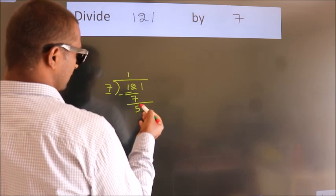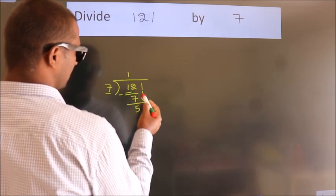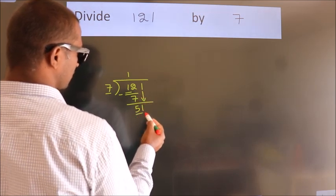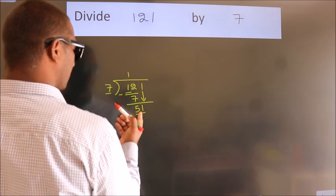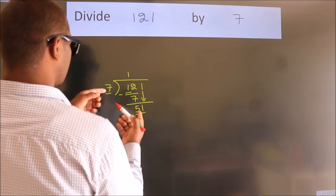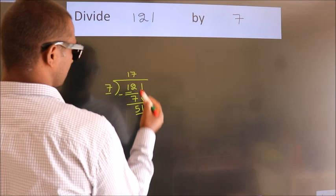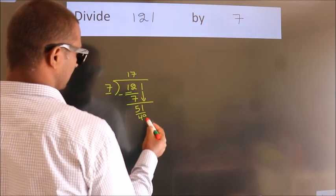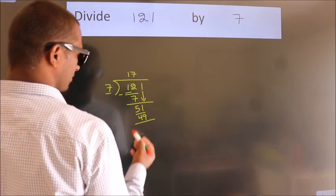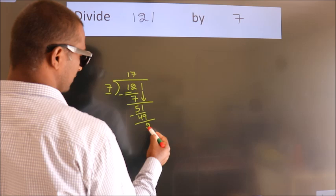After this, bring down the beside number. So, 1 down, giving us 51. A number close to 51 in 7 table is 7 sevens 49. Now, we subtract. We get 2.